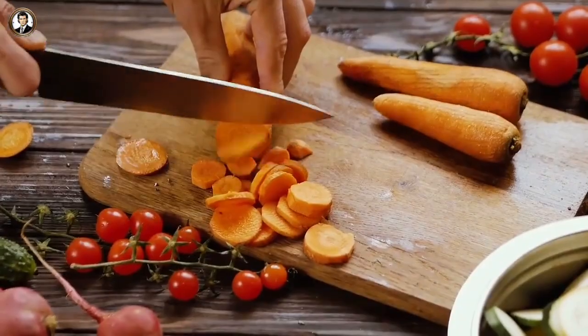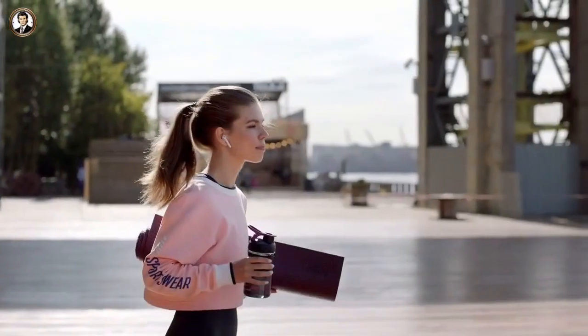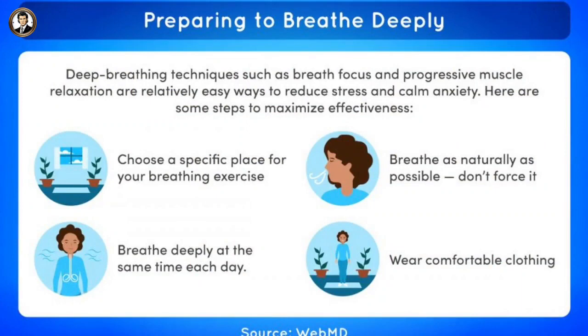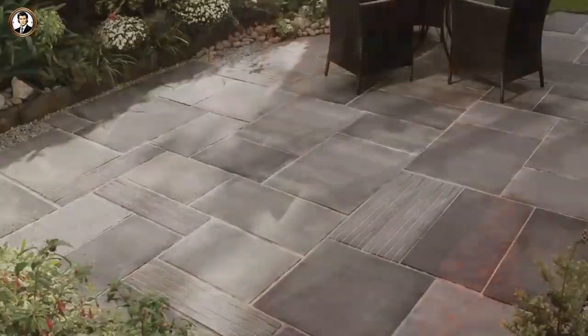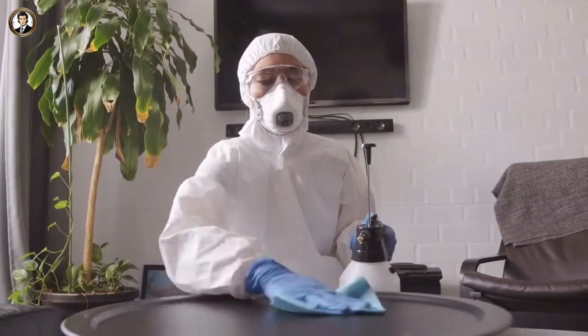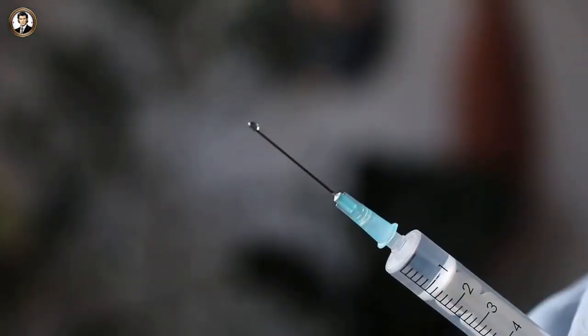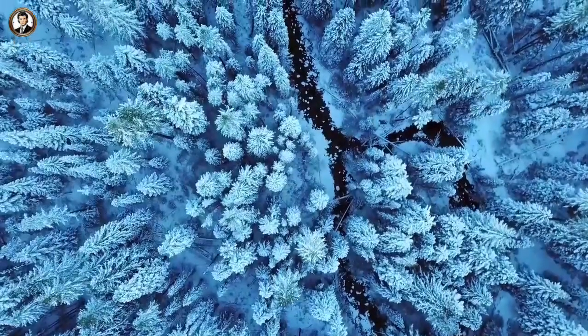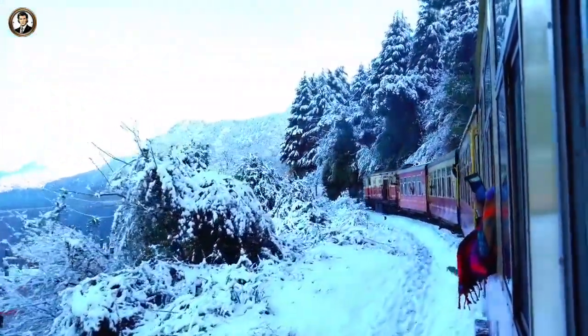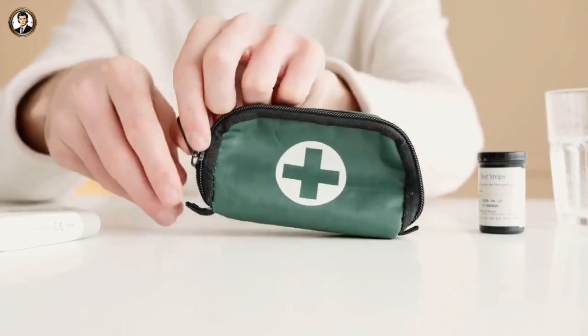Maintain a healthy immune system by eating a balanced diet, getting regular exercise, staying hydrated, managing stress levels, and getting enough sleep. Clean and disinfect frequently touched surfaces such as doorknobs, countertops, and electronic devices. While there is no vaccine specifically for the common cold, getting vaccinated against the flu can help protect your overall respiratory health. Remember that these measures can help reduce the risk of catching a cold, but they do not guarantee complete prevention. If you have specific health concerns, it's always best to consult with a healthcare professional for personalised advice.